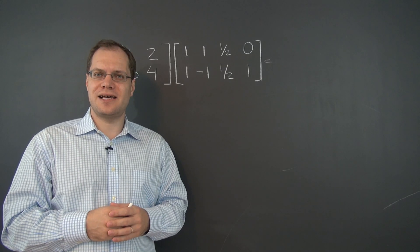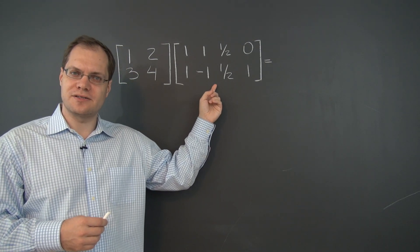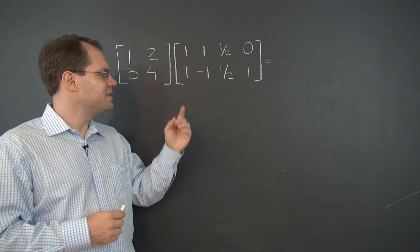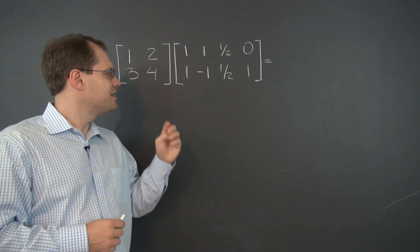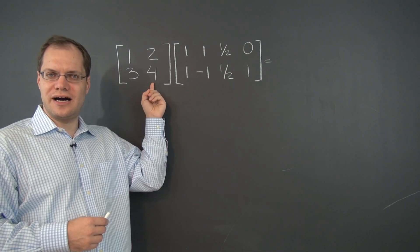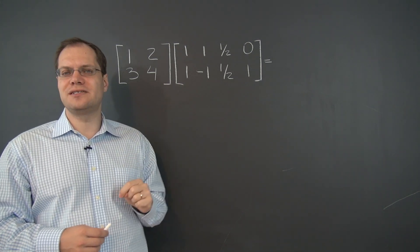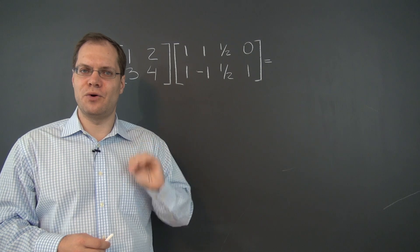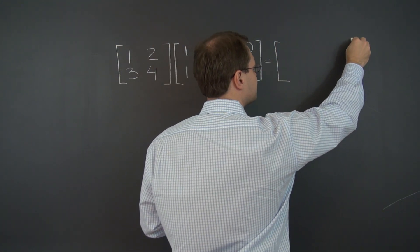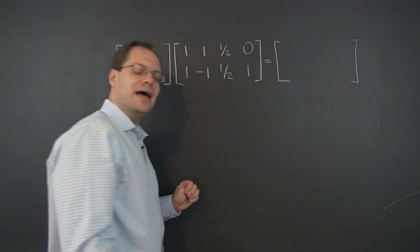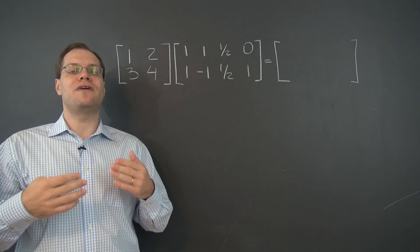Here's our second example. We have a 2 by 2 matrix being multiplied by a 2 by 4 matrix. So in this example we're being invited to calculate 4 linear combinations. In each case it will be a linear combination of these two columns, and the coefficients will come from each of these columns. So the answer will also contain 4 columns and will also be 2 by 4. Let's calculate them one at a time and start thinking about what actions the columns of this matrix are performing.